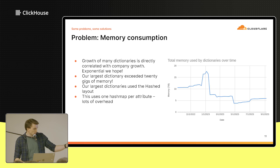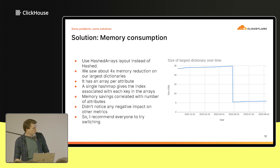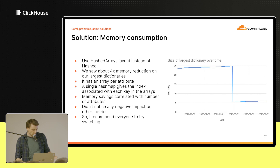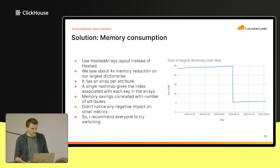The solution — as you can see, memory usage dropped over time even though we have more replicas online — was an in-place change: we replaced the layout with hashed_array. This works by using one array per attribute with a single hash map that tells you what index to use to look up in that array. That massive dictionary using almost 25 gigs at its peak dropped down to five or six gigs. There's an extra layer of pointer dereferencing, but we never saw any real impact, so I'd suggest giving it a try if you're using the hashed layout.